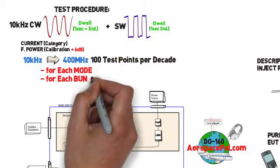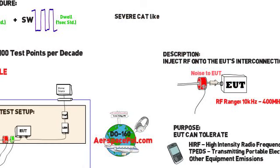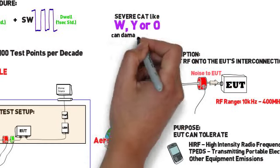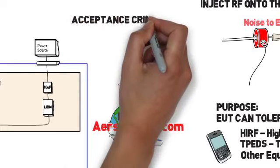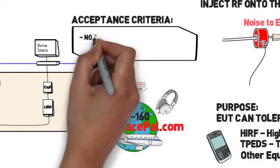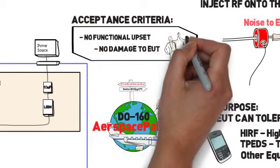The intent of this test is not a damage test however if you're testing to categories high like cat W, Y or O it's possible to see damage. However always write the acceptance criteria that the system shall not have any performance degradation during the test. Monitor your equipment and ensure that you pass.